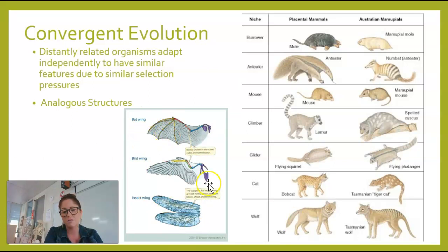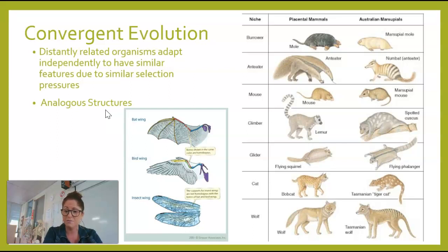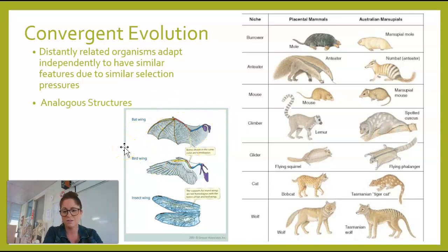You could even use the example of the bat wing, bird wing, and insect wing. None of these are closely related to each other, but their wing structure on the outside is the same. If you look on the inside, however, the actual structures are different. We call these analogous structures, which is different from homologous. With homologous, the structure underneath was the same and the function on the outside was different. With analogous, the structure on the inside is different but the outside is the same, because they're under similar environmental pressures but aren't closely related.